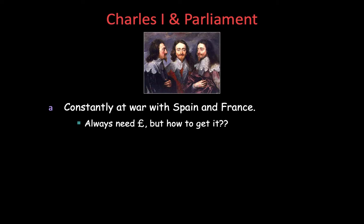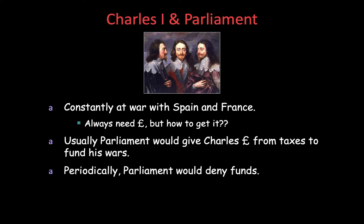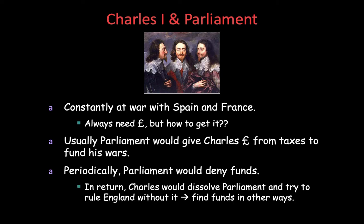Charles ruled without Parliament in a very arbitrary — meaning very random — manner. Charles needs money, and while Parliament would usually fund his wars, sometimes they would not support his actions. What he tends to do is dissolve Parliament and rule without it. He tries to get funds in other ways: he forces people to loan him money, and he sells off titles of nobility.